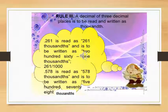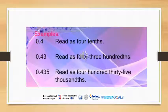A decimal with three decimal places is to be read as thousandths. So 0.261 can be read as two hundred sixty-one thousandths, and another example: 0.578 is read as five hundred seventy-eight thousandths.